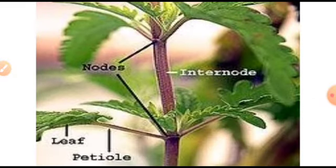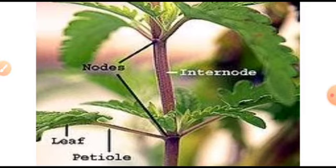This is what you call a stem. We see leaves — where the leaves touch the stem is what you call the point of the node. The length between one node and another node is what you call the internode.